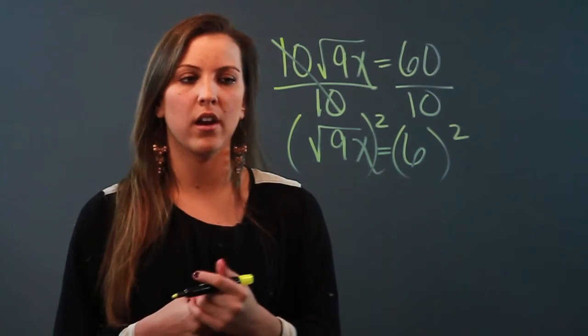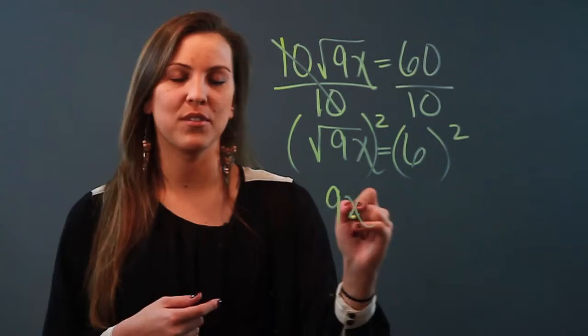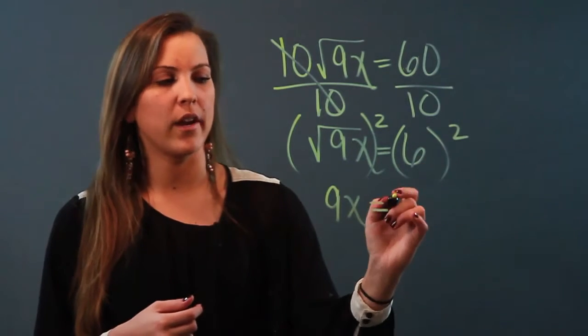Now what happens when you square a square root? Well you end up with just what was inside of the square root sign. So I just end up with 9x equals 6 squared is 36.